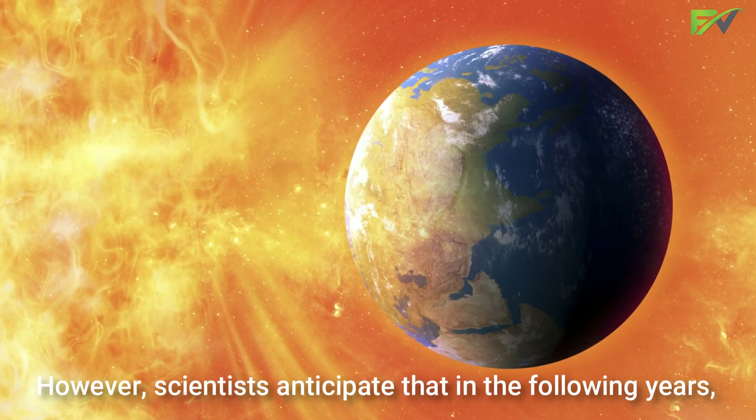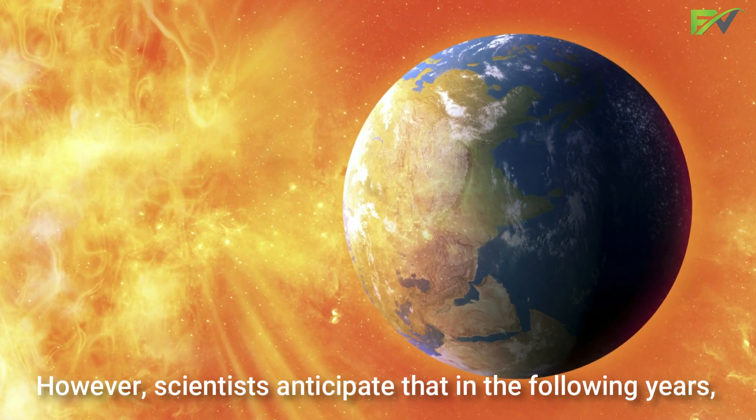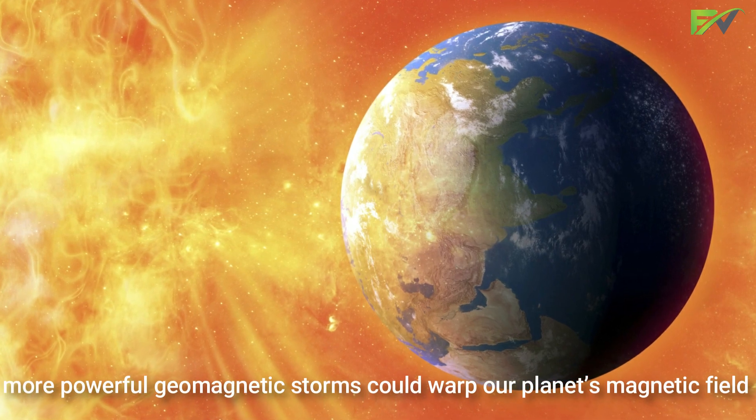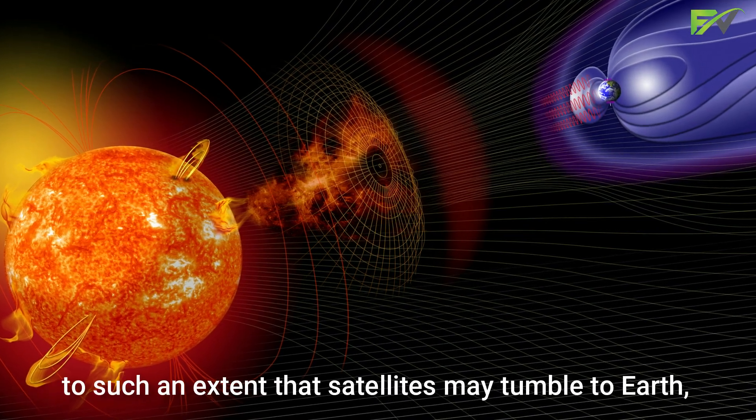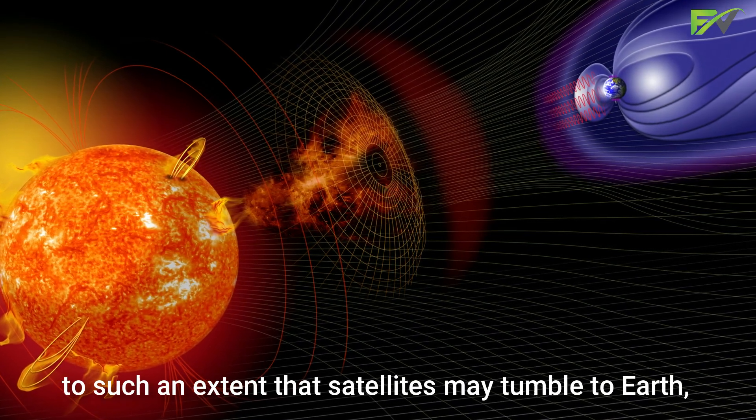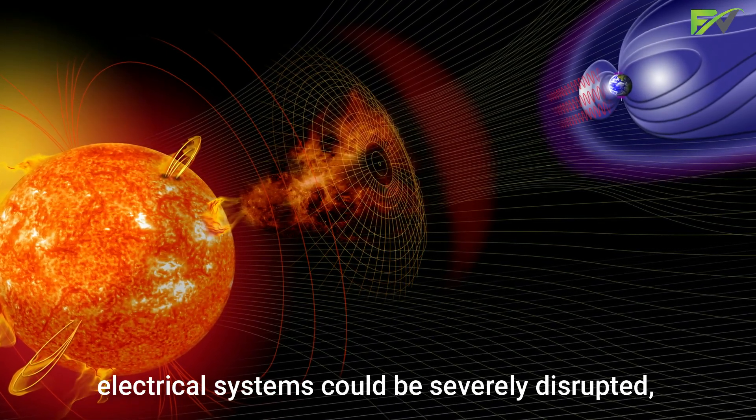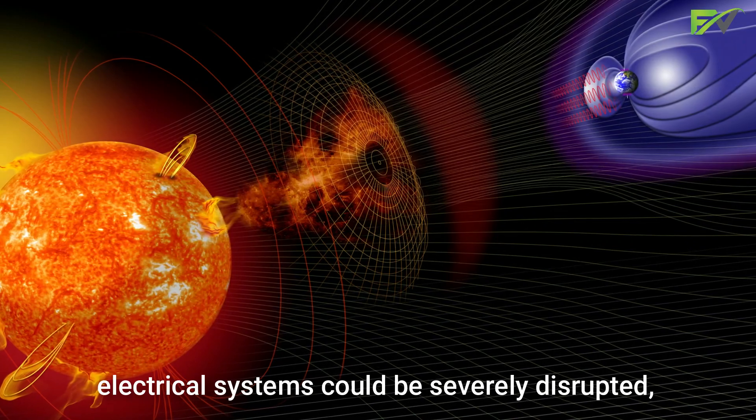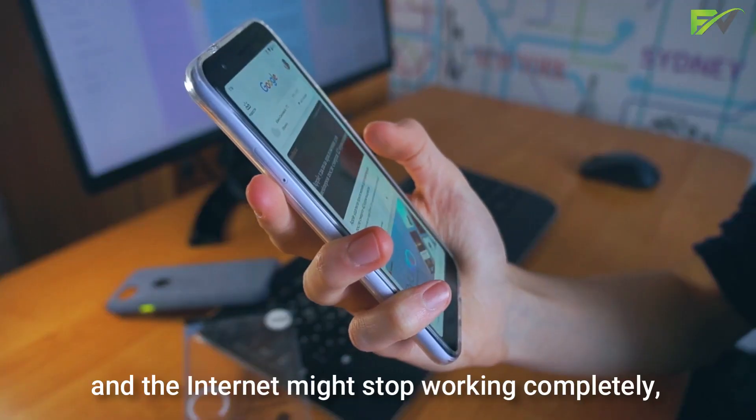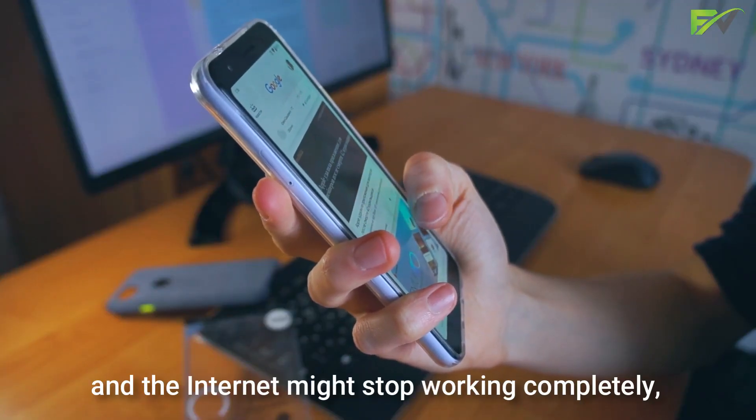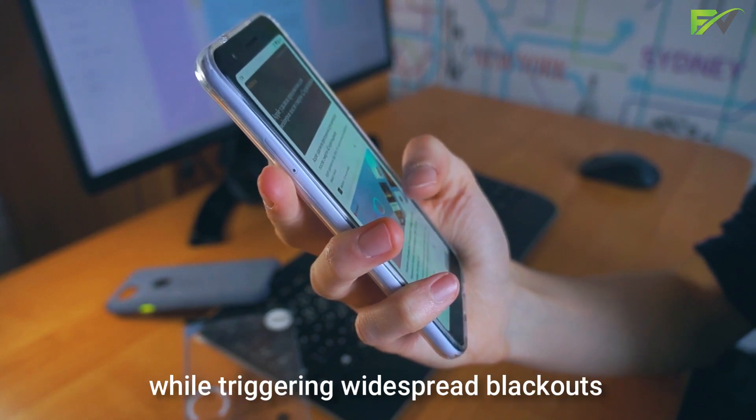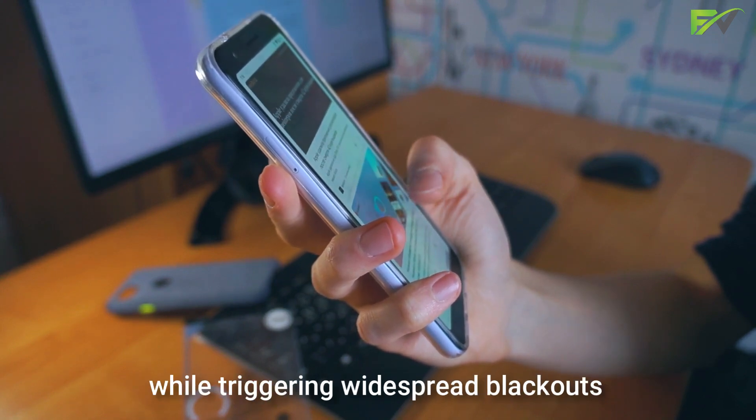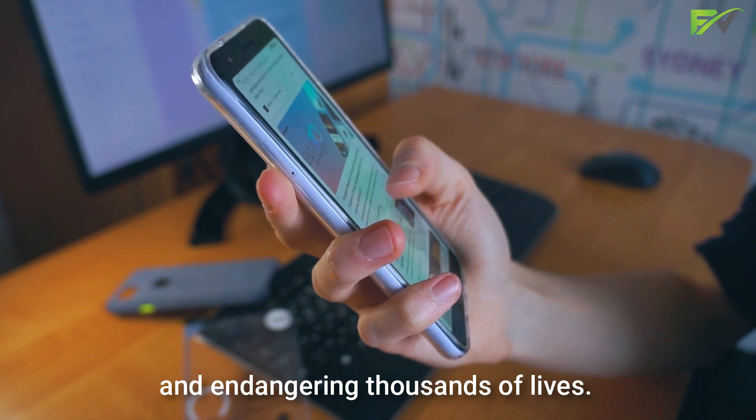However, scientists anticipate that in the following years, more powerful geomagnetic storms could warp our planet's magnetic field to such an extent that satellites may tumble to Earth. Electrical systems could be severely disrupted, and the internet might stop working completely, thus causing trillions of dollars worth of damage while triggering widespread blackouts and endangering thousands of lives.